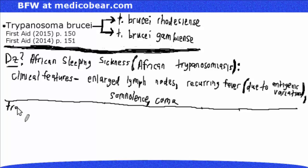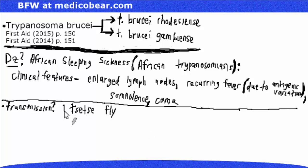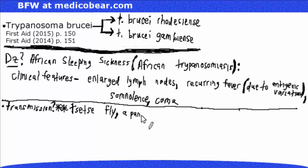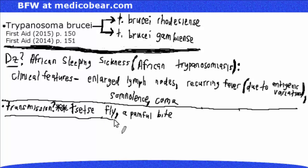Let's look at how this disease is transmitted. It is transmitted by the tsetse fly — this is certainly high yield to know. More specifically, it is transmitted by the bite of the tsetse fly, which is a painful bite. Definitely be on the lookout for the tsetse fly mentioned in the clinical vignette.